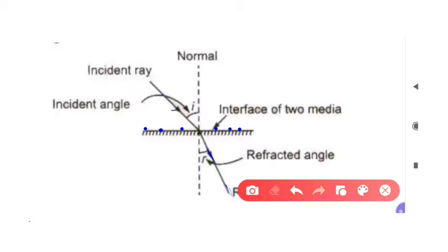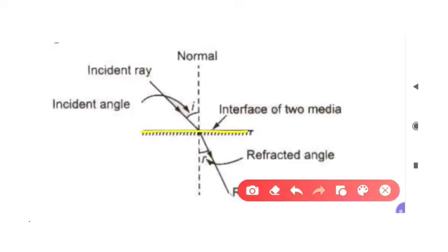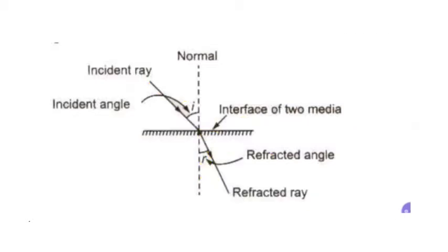Now we talk about terminologies. Like we have seen in reflection of light, the same terms are used here. We have two mediums — medium 1 and medium 2. We have an incident ray, a refracted ray, and an interface of the two mediums. We have an angle of incidence and an angle of refraction, as well as a normal at the point of incidence. I hope this diagram is very clear.